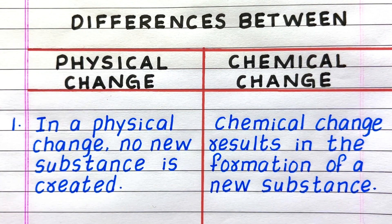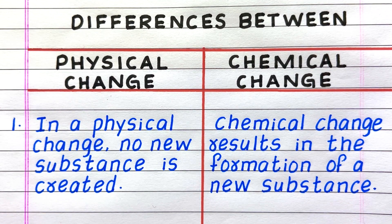First difference: in a physical change, no new substance is created, whereas a chemical change results in the formation of a new substance.